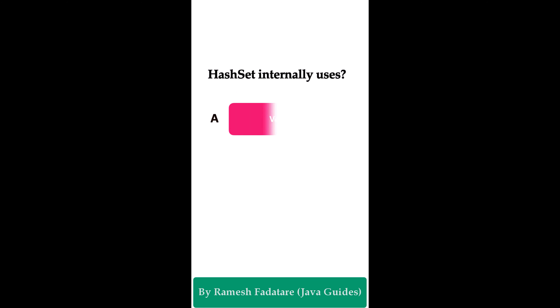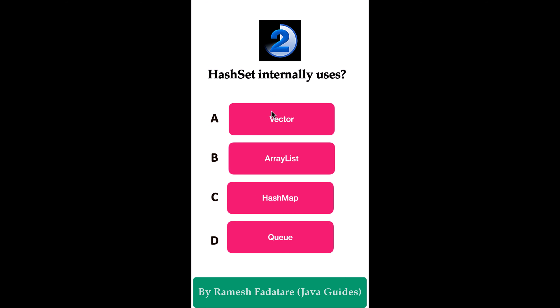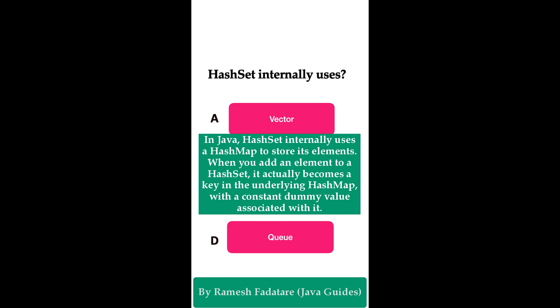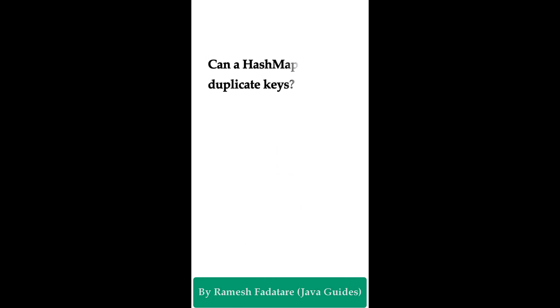What does HashSet internally use? Option A: Vector. Option B: ArrayList. Option C: HashMap. Option D: Queue. The correct answer is HashMap. The HashSet class internally uses a HashMap to store its elements. When you add an element to a HashSet, it becomes a key in the underlying HashMap with a constant dummy value associated with it. The uniqueness of elements in a HashSet is ensured because HashMap keys must be unique.